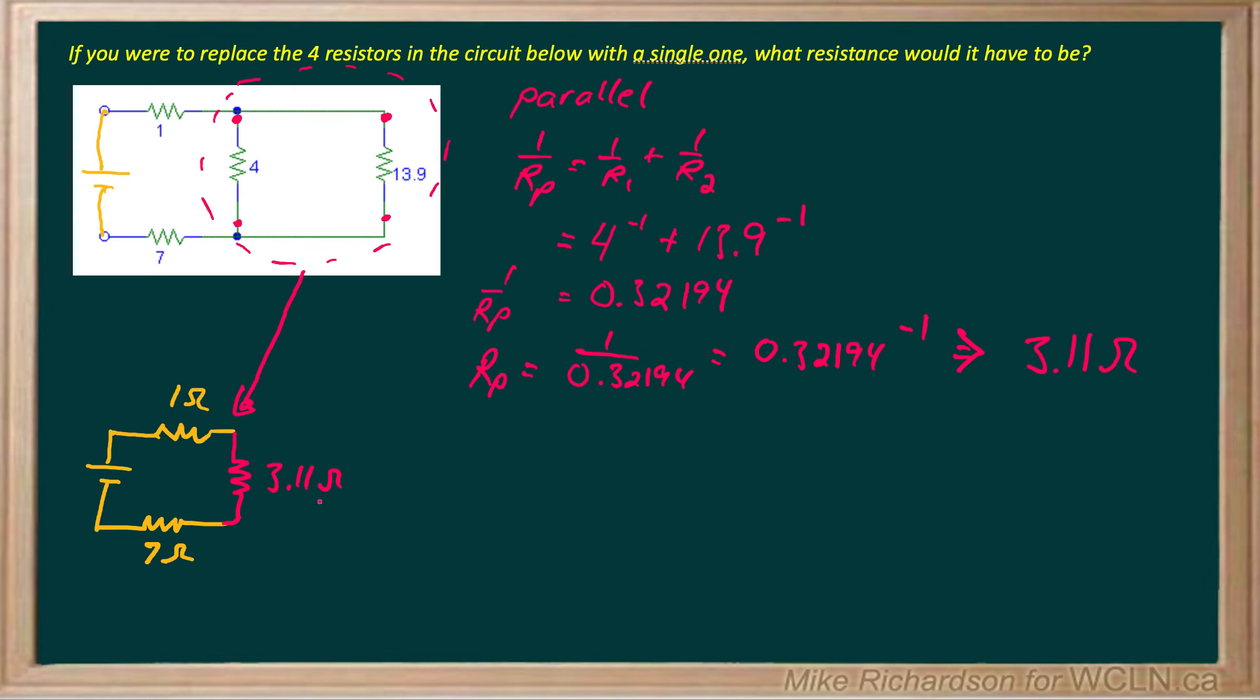And now we see a simple series circuit where I just add them together and I get my total resistance is 1 plus 7 plus 3.11. And they're all in ohms. And you end up getting 11.1 ohms resistors from my total equivalent resistance.